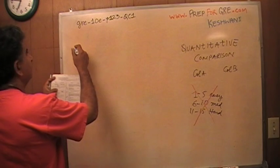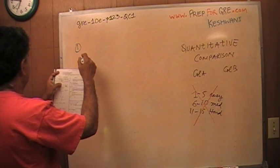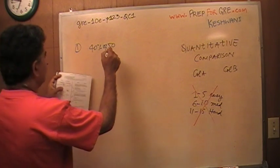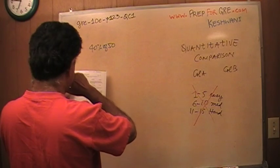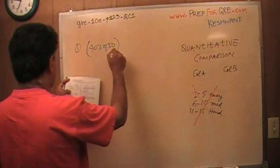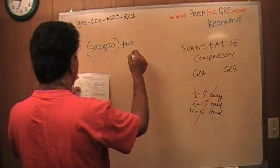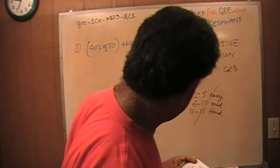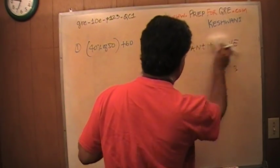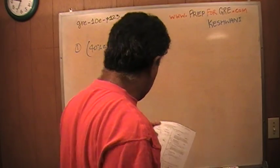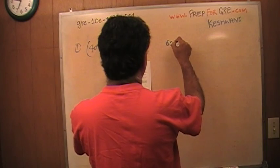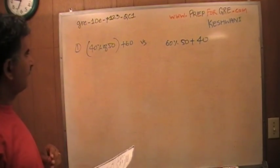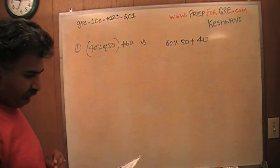Number 1: 40% of 50 plus 60 versus, let me erase all this. 60% of 50 plus 40. All right, let's see what we can do here.